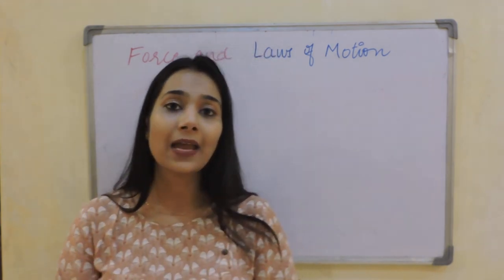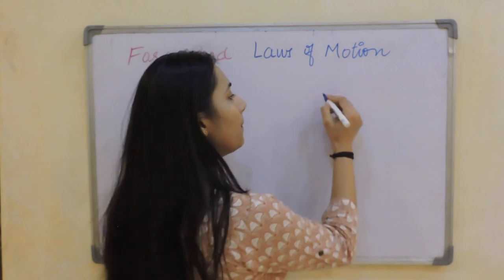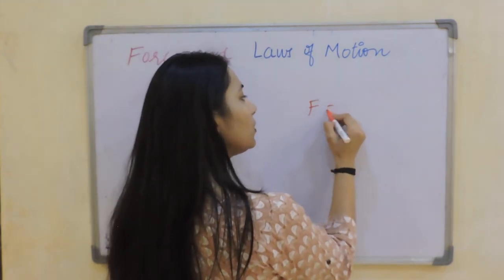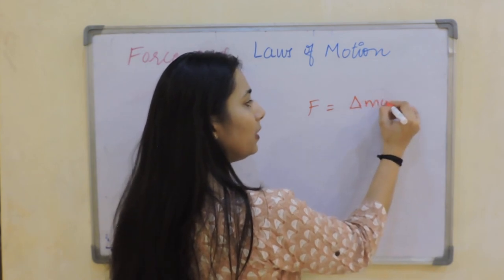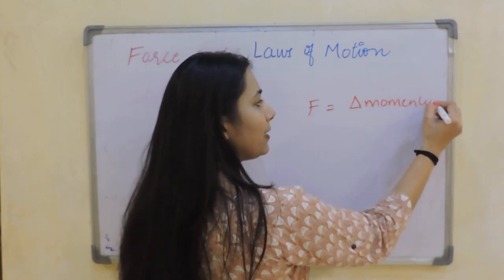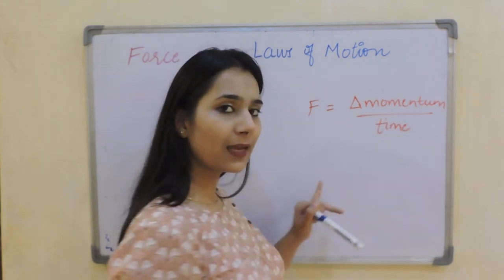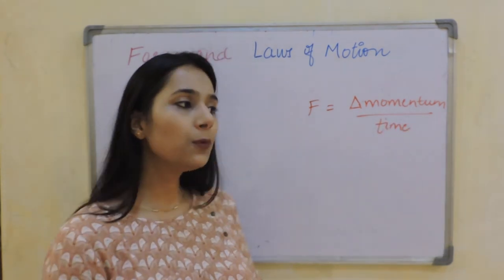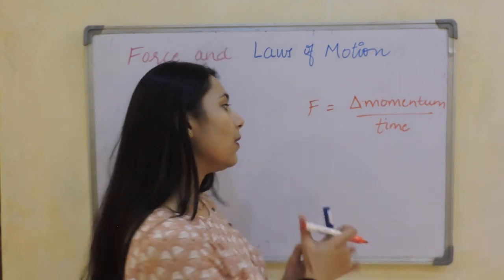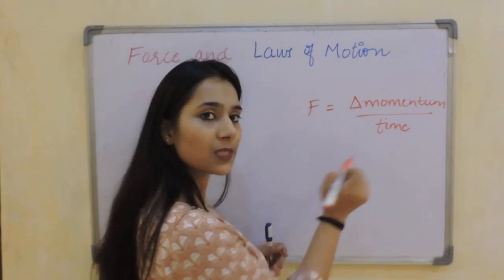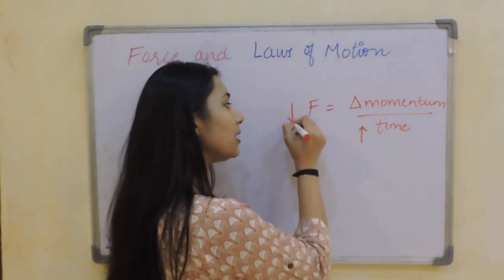Why do you think he pulls his hand backwards? He does this because we have already studied that force is equal to the rate of change of momentum — delta momentum divided by time. This is the equation for the second law. When the person pulls his hand backwards, he increases the time. Since force is inversely proportional to time, as the time period increases, the force decreases.